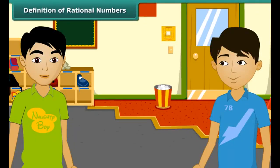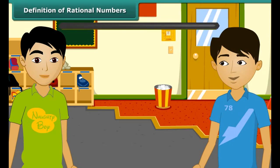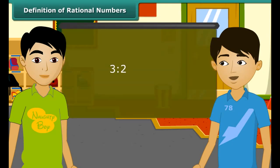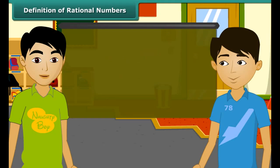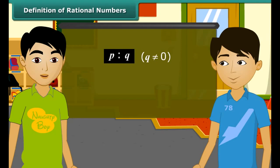The word rational arises from the term ratio. You mean that a ratio like 3 is to 2, which can also be written as 3 by 2, is a rational number? Yes. Similarly, the ratio of two integers P and Q, in which Q is not equal to 0, can be written in the form P by Q.